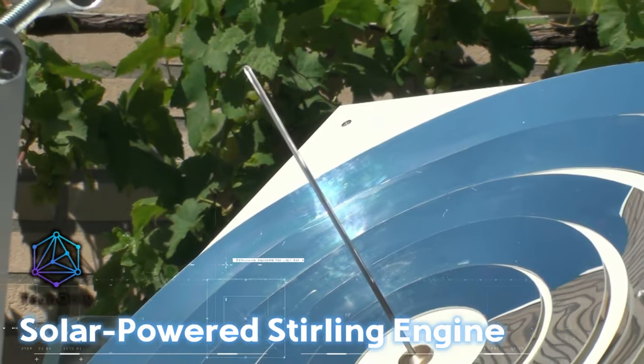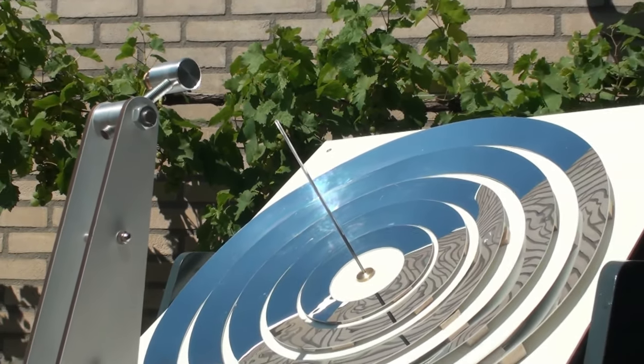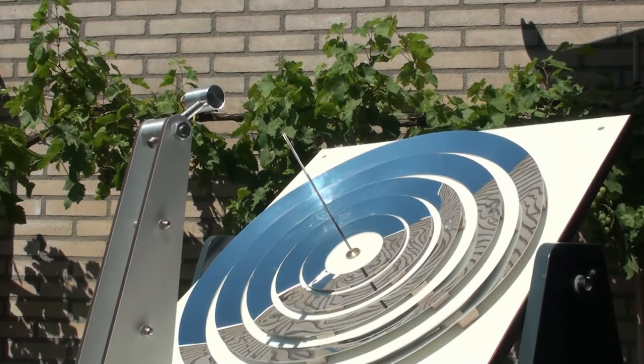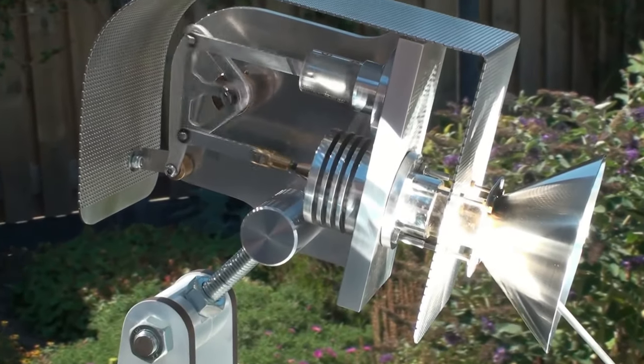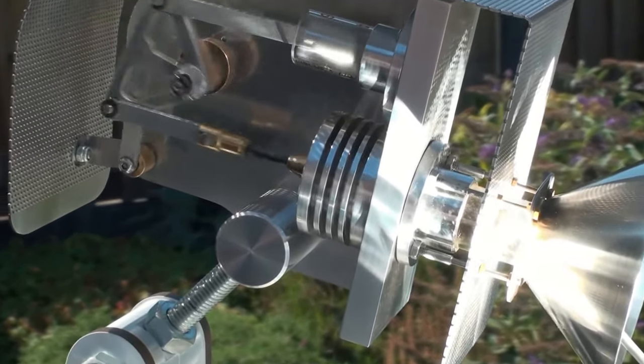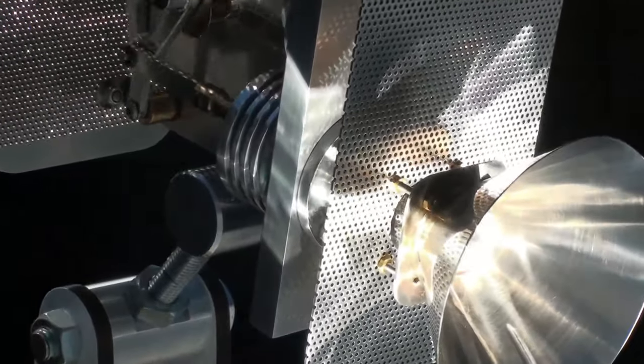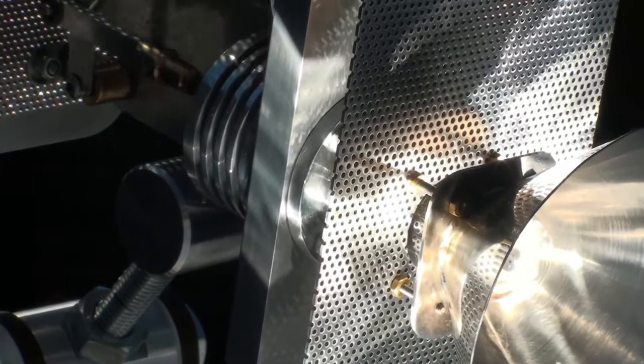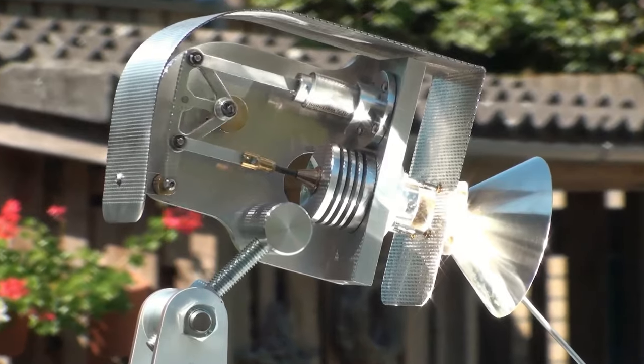And this is one unique and eco-friendly model that harnesses the power of the sun to generate motion. As you can see, it's custom-made and uses a Fresnel lens to concentrate sunlight and generate power. However, due to the small size of the lens, the amount of electricity produced is not significant enough for practical use, and it is primarily intended for educational or demonstration purposes.